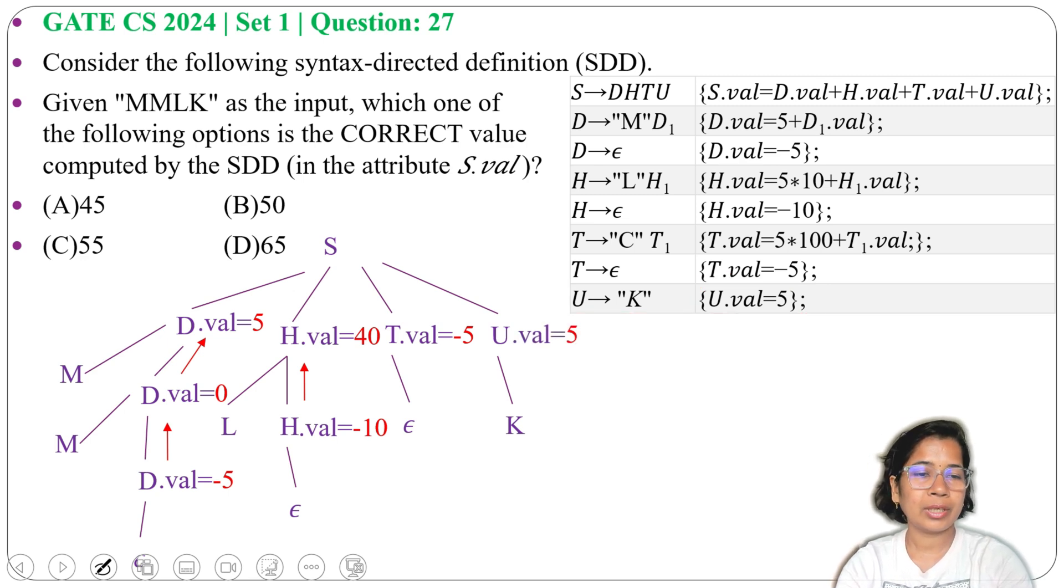So here the definition is S.val = D.val + H.val + T.val + U.val. So we'll add all these: 5 + 40 + (-5) + 5 = 45.